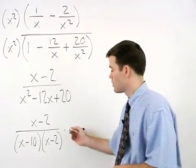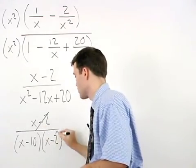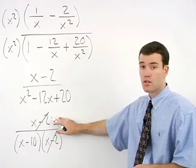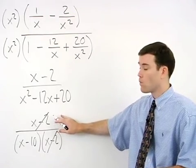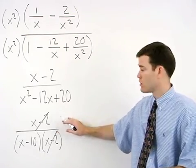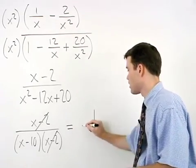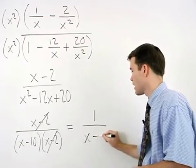So our x minus 2's cancel. And remember that when the numerator cancels out entirely, we leave a 1 in the numerator of our answer. So we have 1 over x minus 10.